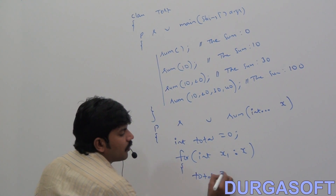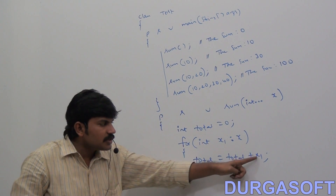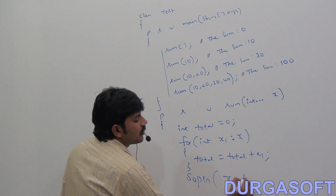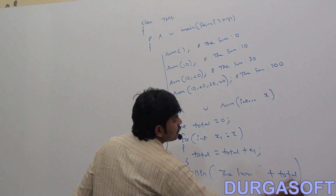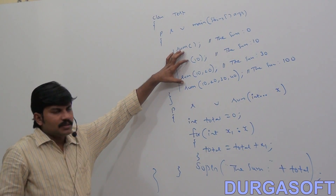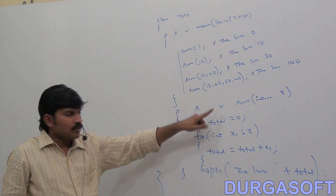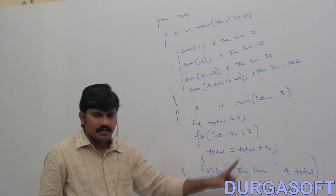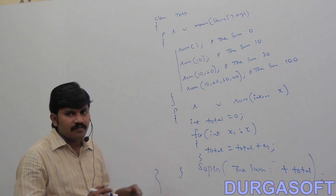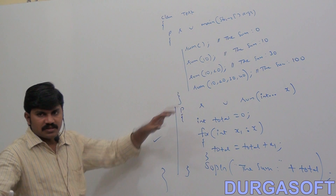When no value is passed, total is 0, so the sum is 0. When one int value 10 is passed, total = 0 + 10, so the sum is 10. If you want to print the sum of any number of int values, just one method is enough — that is the power of varargs method. I hope you can understand where exactly varargs method is best suitable.